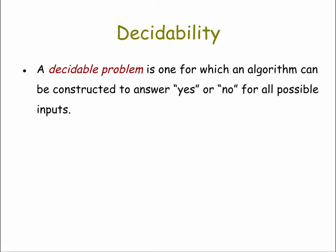Let's start with undecidable problems. A decidable problem, by definition, is one for which an algorithm can be constructed to answer yes or no for all possible inputs. A simple example would be determining whether a number m is even or not — given any number m, we can write an algorithm that will answer yes or no.